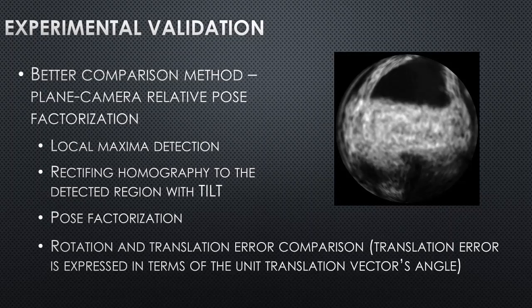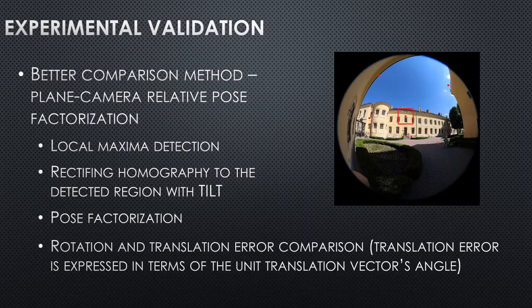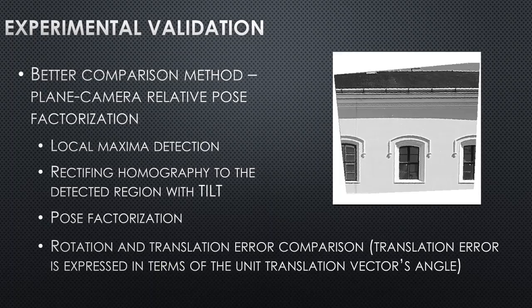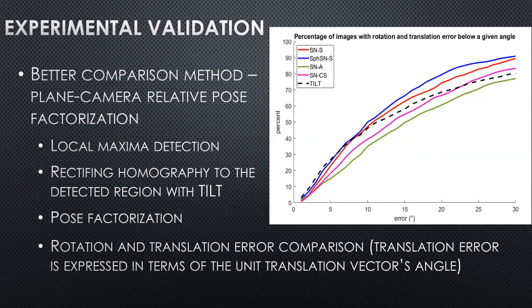In this method, we first detected local maxima on the network's predictions. Then, at these positions, we run the TILT algorithm to get the rectifying homography, and with the rectifying homography we factorized a plane-camera relative pose. We also calculated the ground-truth plane-relative pose, and between these two poses we calculated the rotation and translation error. As you can see in the figure, our spherical network performs better than the others, and also better than TILT itself, shown by the dashed line.